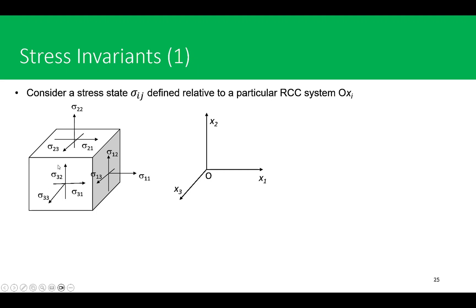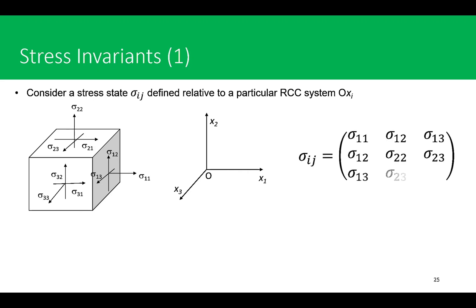We have three direct components and three shear components if the stress tensor is symmetric. If it is not symmetric, we will have six shear components. Written in matrix form, the second-order stress tensor sigma_ij, where i and j both vary from one to three, has components sigma_11, sigma_12, sigma_13 from the first plane, and similarly three components from each of the other planes, giving nine stress components in total.